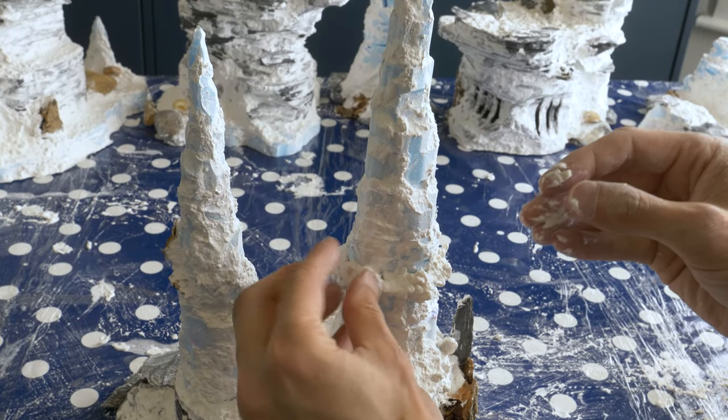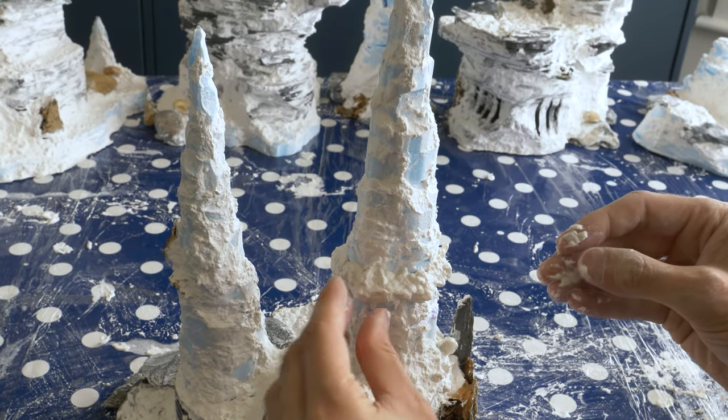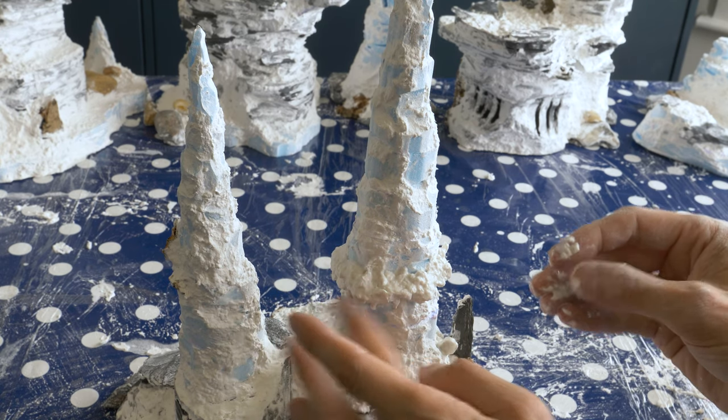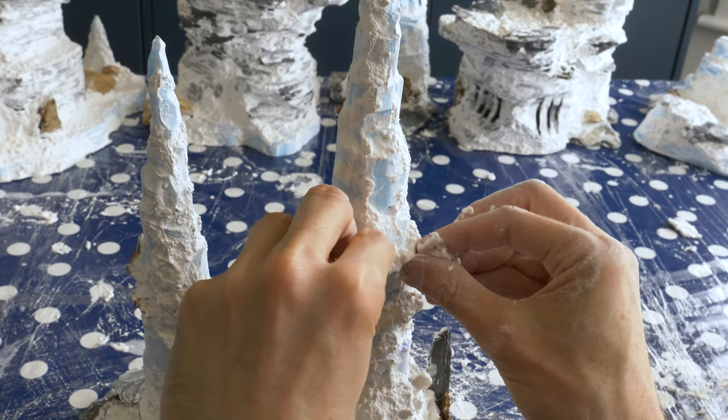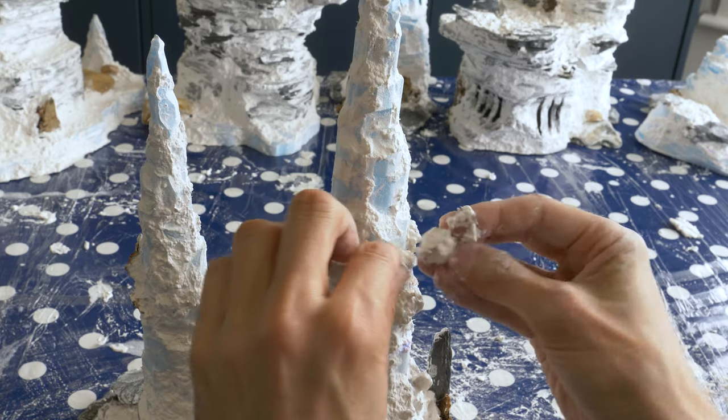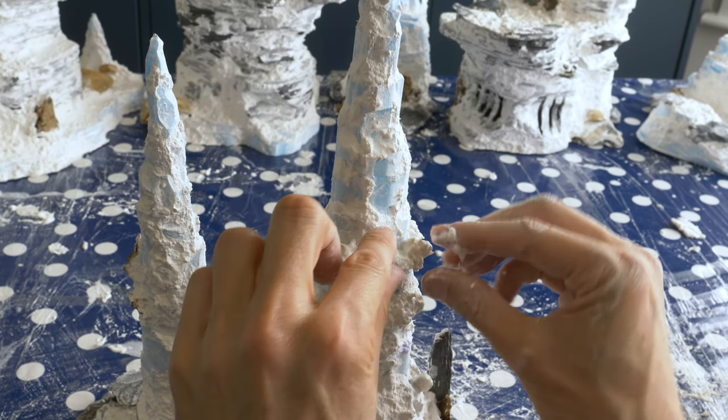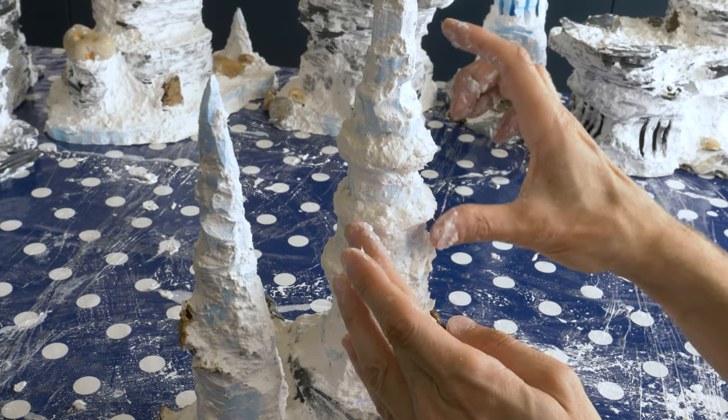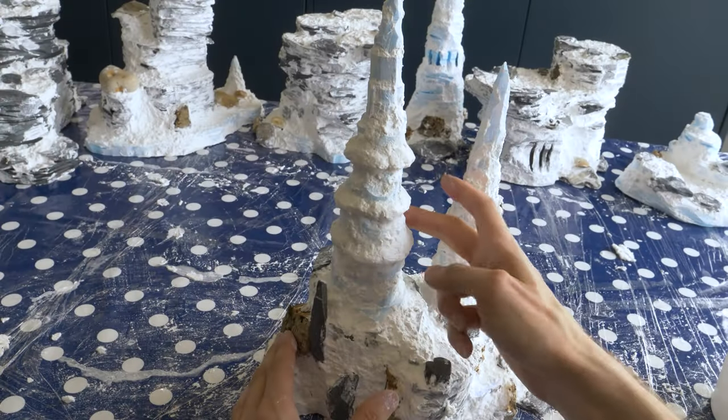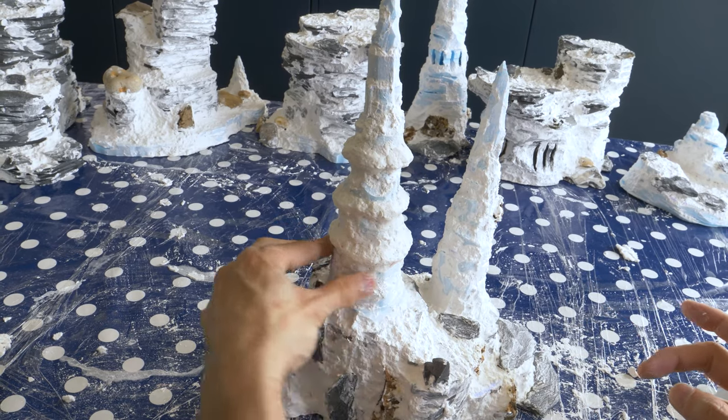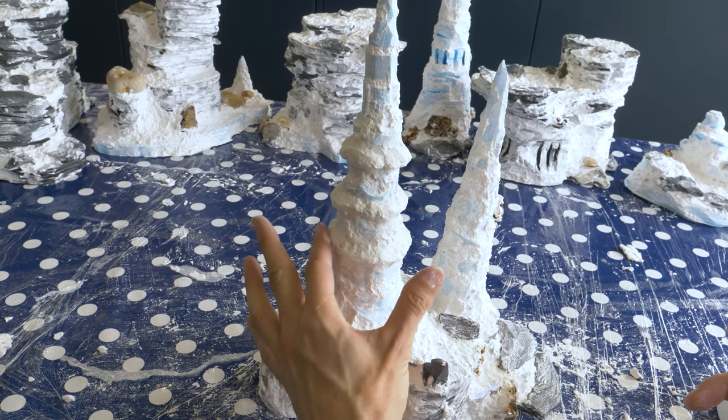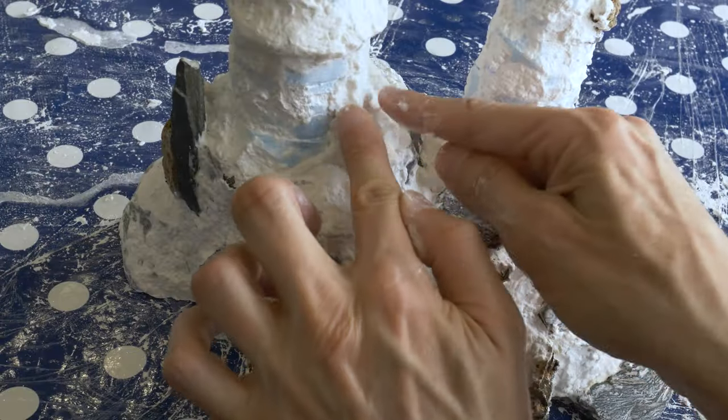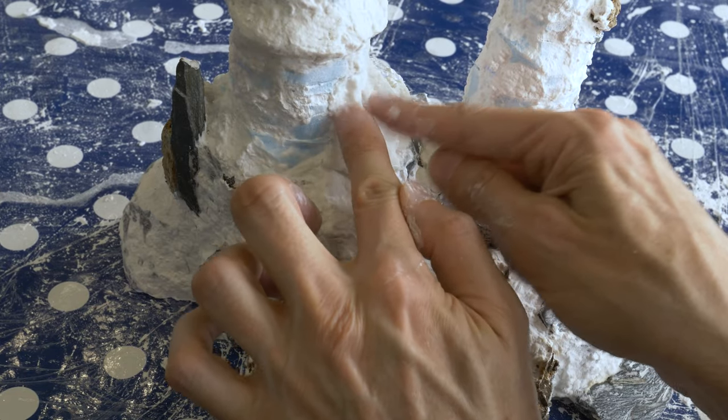Here, I've chosen to use a sculptor mould to build up some ridges running around the circumference of one of these spires. As the sculptor mould begins to dry, it becomes a lot easier to smooth out. I'm also creating some thin, vertical ridges around the base of the spire.